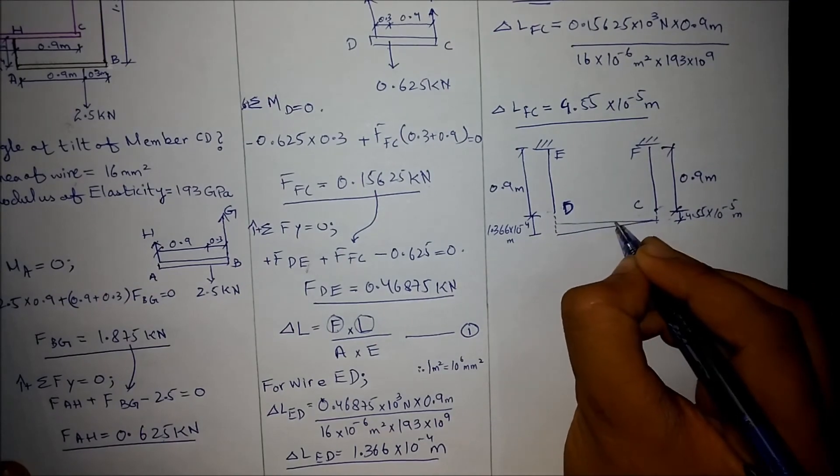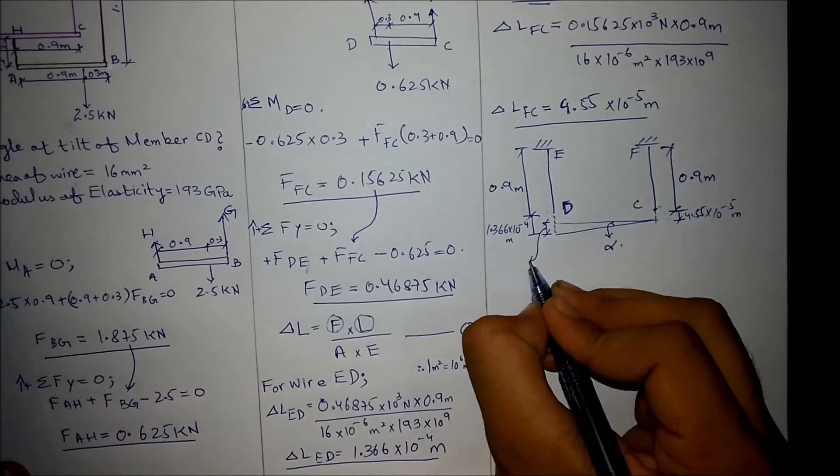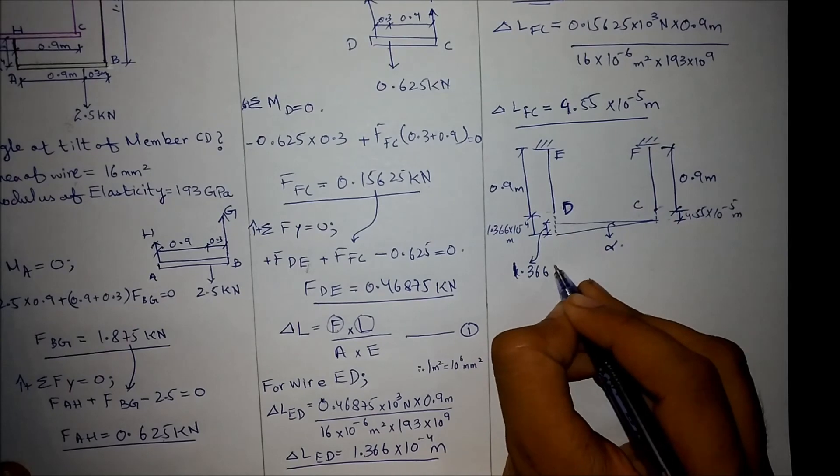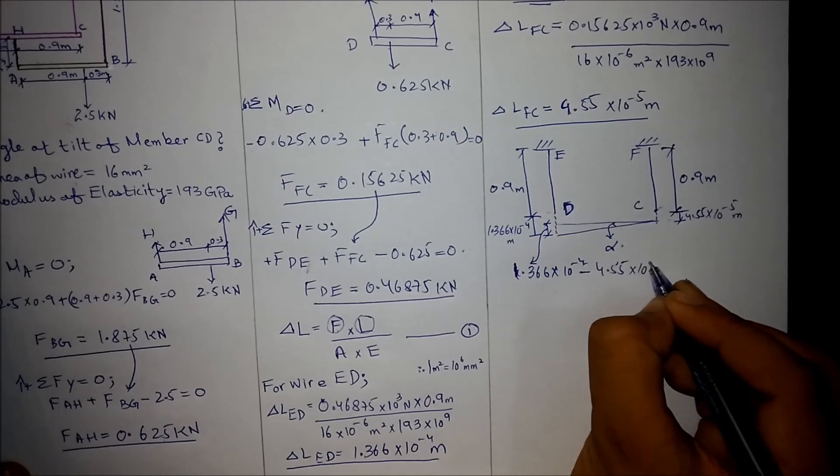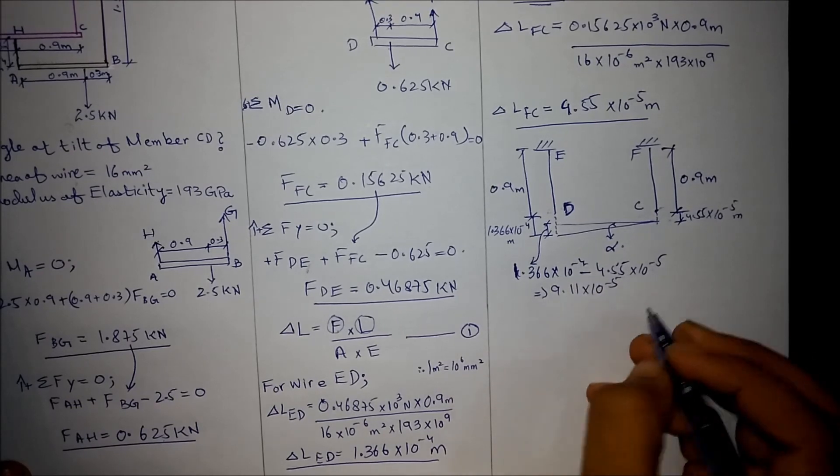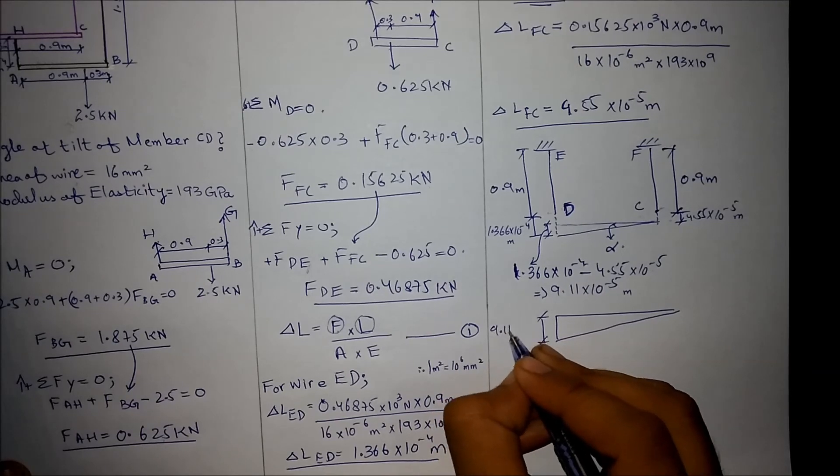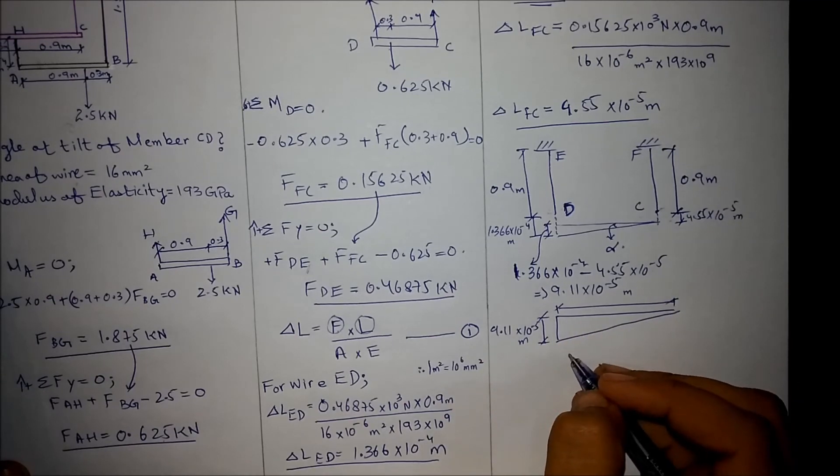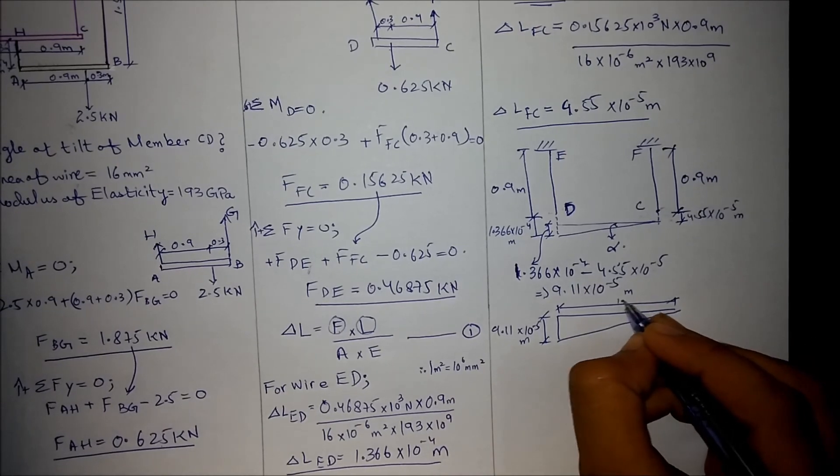We need to find out this angle. Let's call this as angle alpha. This length would be 1.366 × 10⁻⁴ minus 4.55 × 10⁻⁵, that comes out to be 9.11 × 10⁻⁵ meters. So we will have a triangle like this, having this length as 9.11 × 10⁻⁵ meters and the base of this length is 1.2 meters. This is angle alpha.